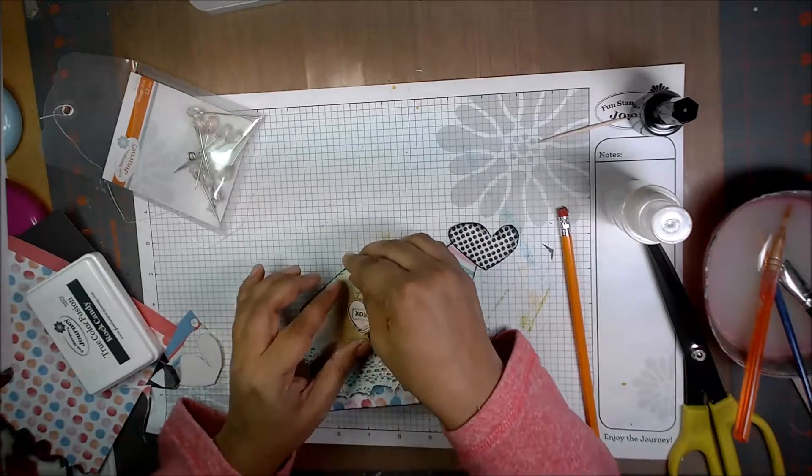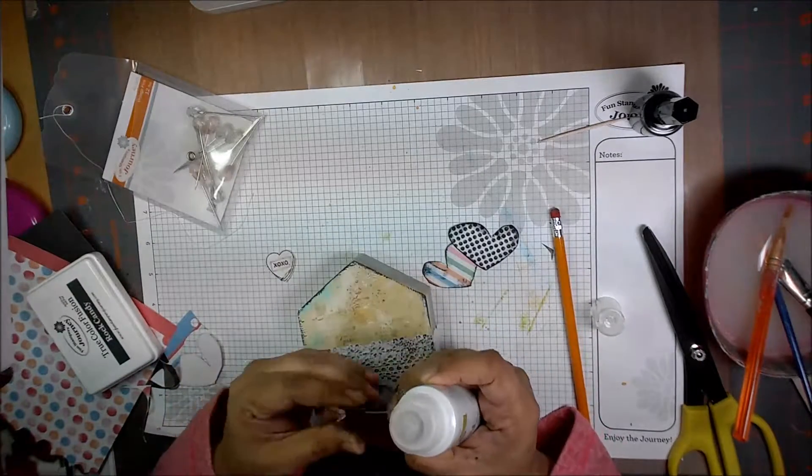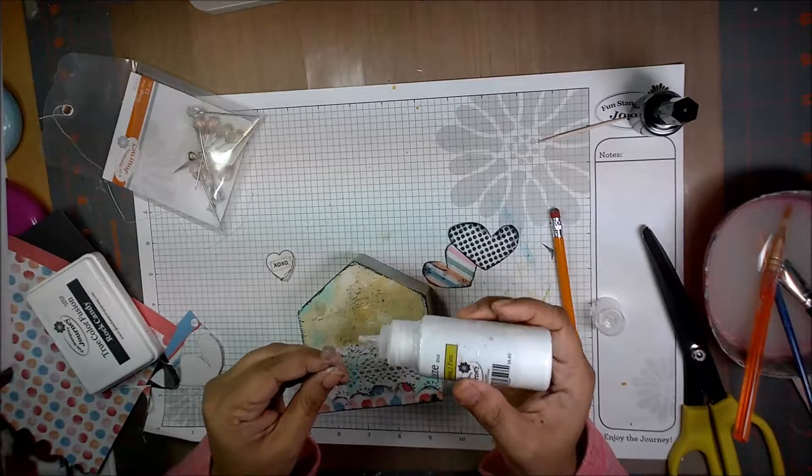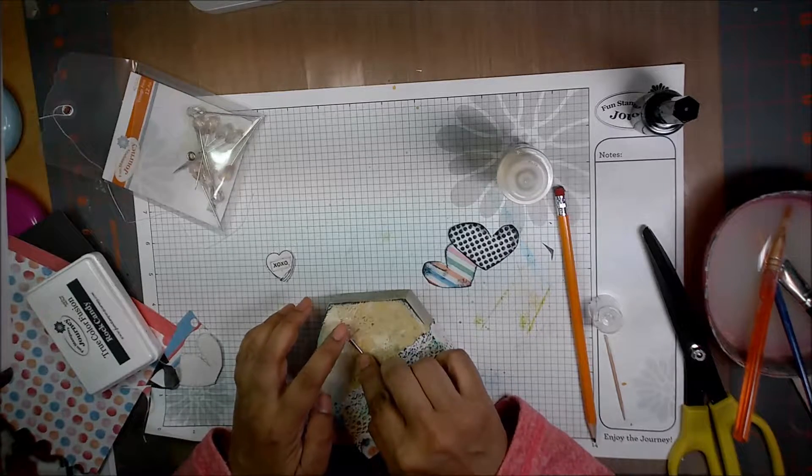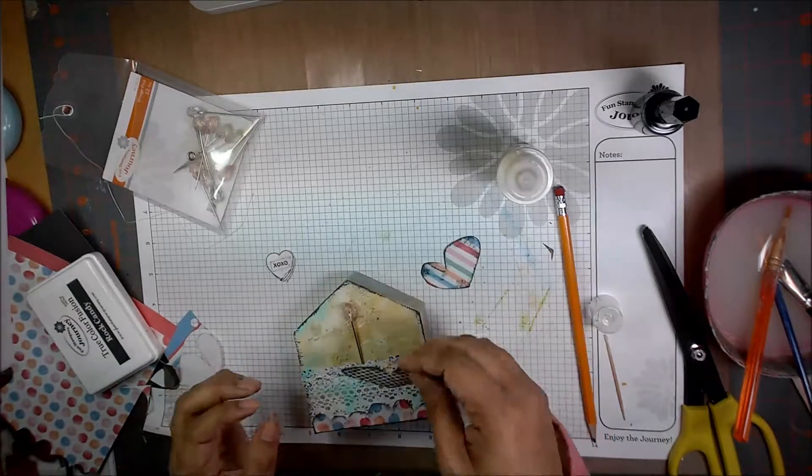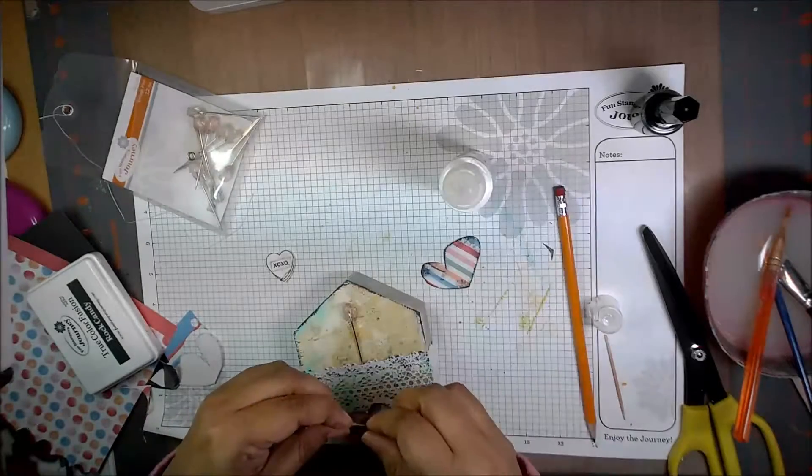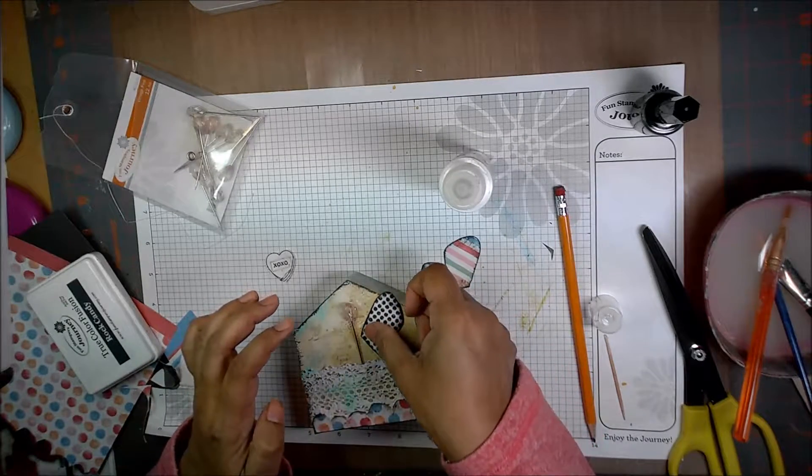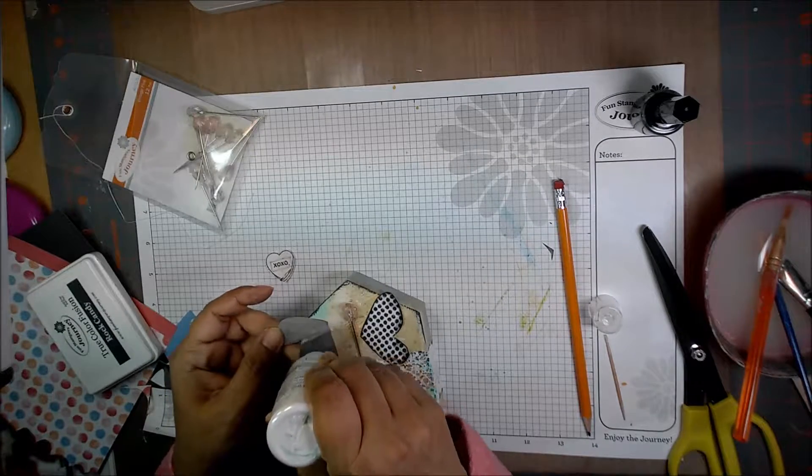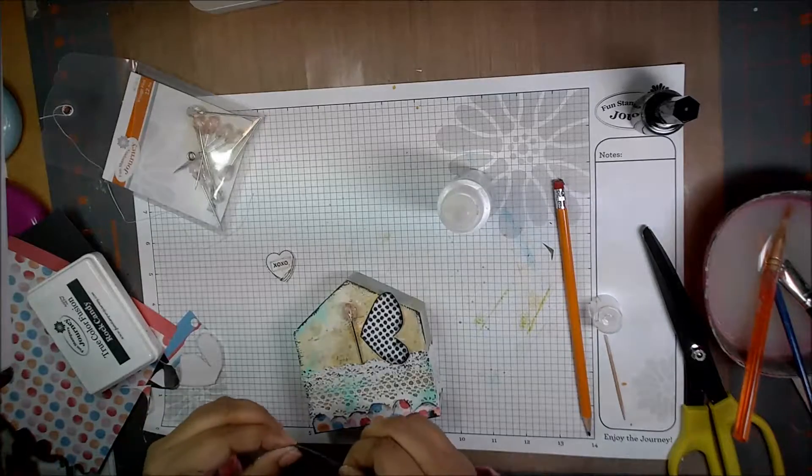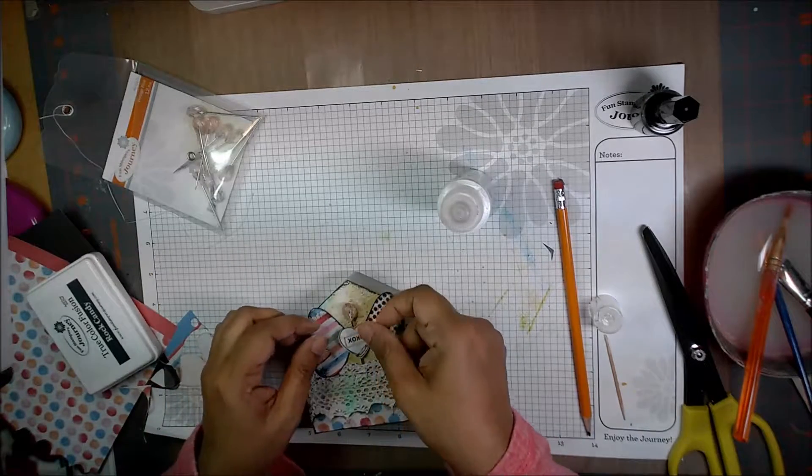So now we come to the final part of assembling everything and I'm gonna start by putting a little glue. Let me just stick it in here. Let's put some glue on the wings.